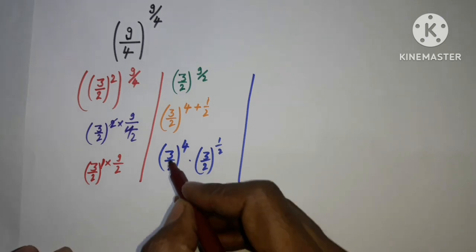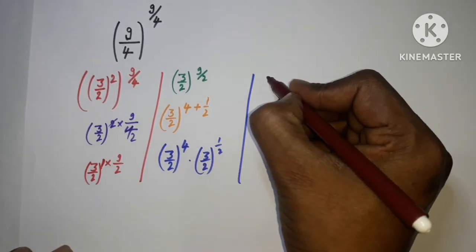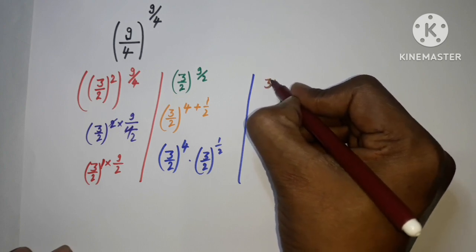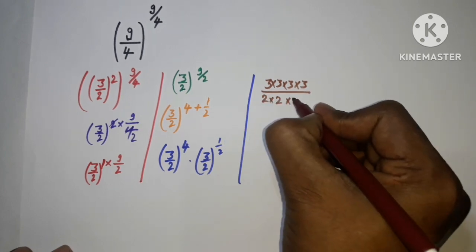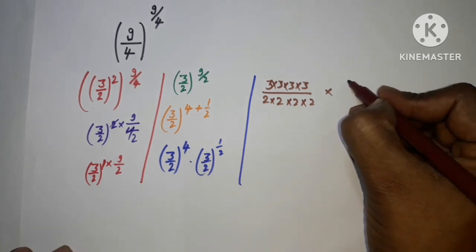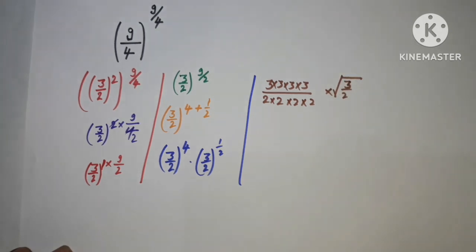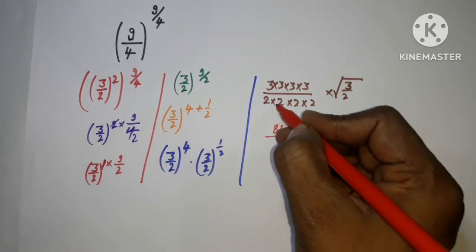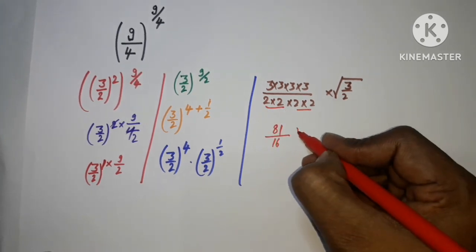Now (3/2)⁴ can be expanded as 3×3×3×3 over 2×2×2×2, and (3/2)^(1/2) is written as the square root of 3 upon the square root of 2. So 3⁴ equals 81 and 2⁴ equals 16.